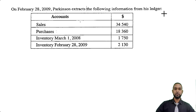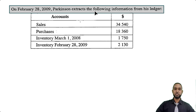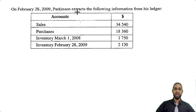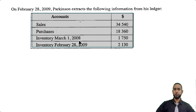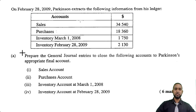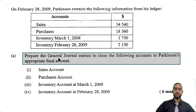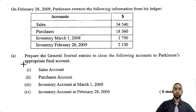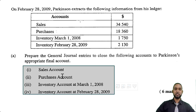With that said, let's get into the question. On February 28th 2009, Parkinson extracts the following information from his ledger. We have a table giving us the balances for sales, purchases, opening stock, and closing stock. March 1st 2008 is the opening balance, one year before February 28th 2009. They want us to prepare general journal entries to close those accounts to Parkinson's appropriate final account, and that's worth six marks.